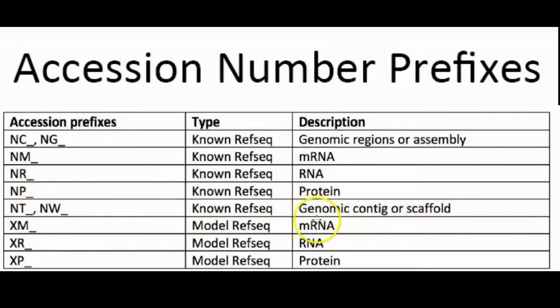There are a couple of computationally predicted sequences in NCBI. They usually start with X. Here is XM underscore, XR, and XP. These sequences are not derived from experimental evidence, so they have been assigned with prefixes XM, XR, and XP.